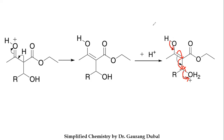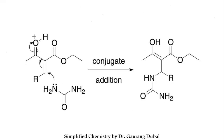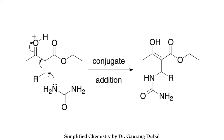This leads to the formation of a pi bond between carbon and oxygen, which converts into a protonated form again. This protonated form will react with urea. Urea donates its lone pair on nitrogen to the carbonyl carbon, which leads to electron donation and an inductive effect transferring electrons to oxygen. The carbon becomes positive, forming a new double bond — an enol form. This is called the conjugate addition of urea.